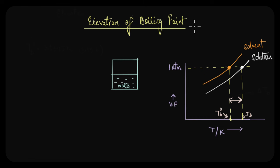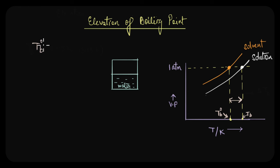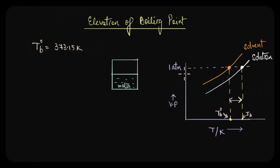We know that the boiling point of a liquid is the temperature at which its vapor pressure equals the atmospheric pressure, or 1 atmospheric pressure. For water, the boiling point is 100 degrees Celsius or 373.15 Kelvin — that is the temperature at which the vapor pressure of water equals the atmospheric vapor pressure.